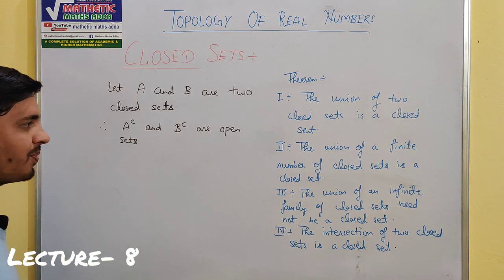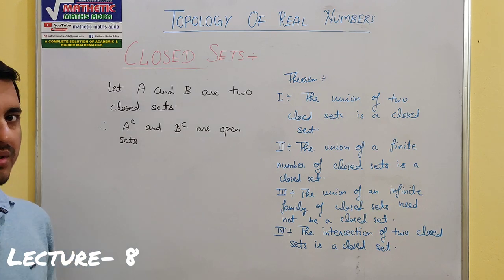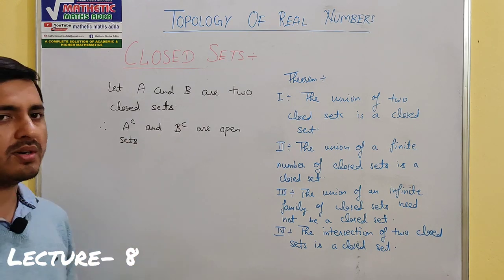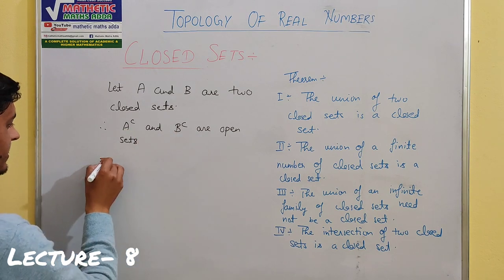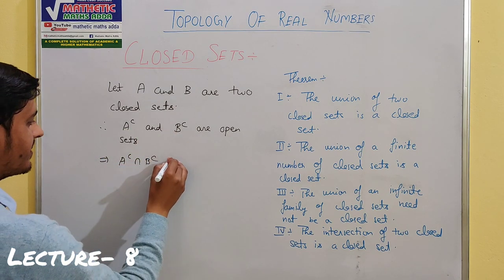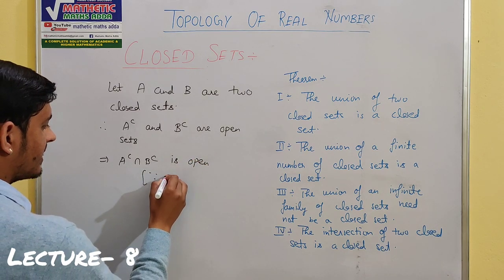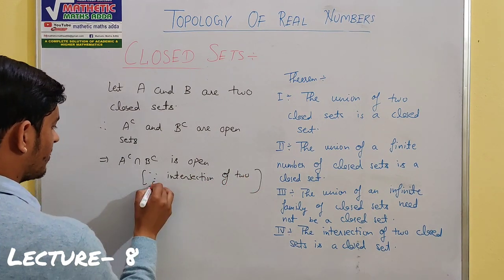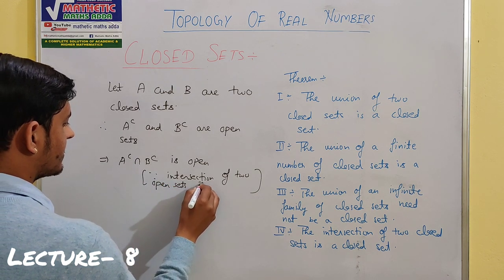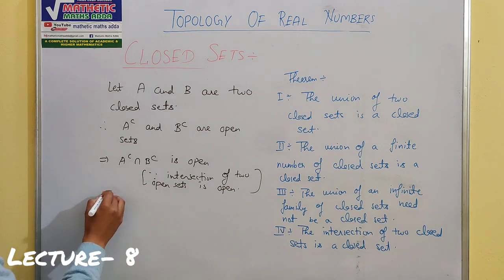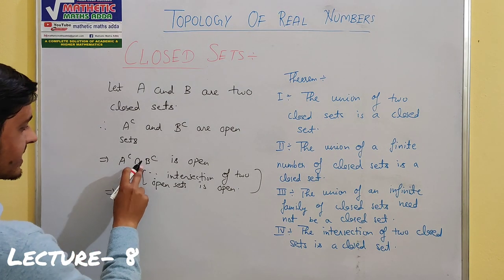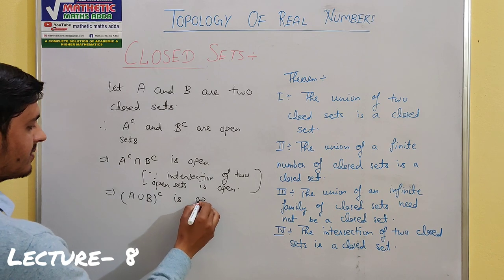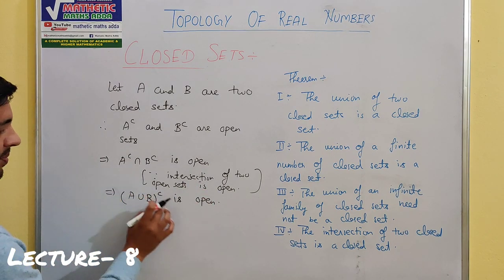Now talking about two open sets — since I have already proved this in a previous video, I am directly using the result here. The intersection of two open sets is also an open set. So since both A complement and B complement are open, A complement ∩ B complement is open — because the intersection of two open sets is always open.